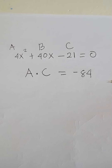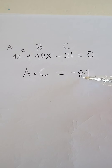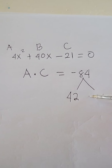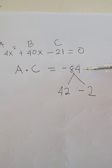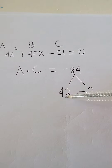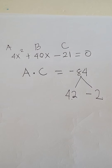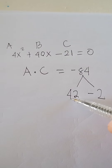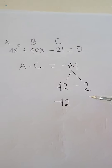We are going to factor out negative 84 such that the sum of these factors equals positive 40. So we have 42 and negative 2. If we multiply these two numbers, the result is negative 84, and their sum equals 40. Then, we change the sign: positive 42 becomes negative 42, and negative 2 becomes positive 2.